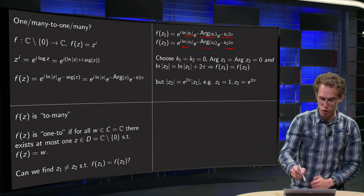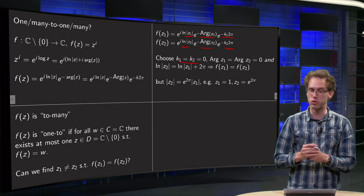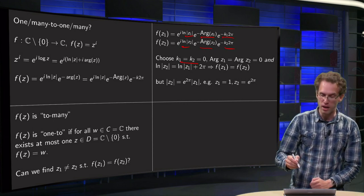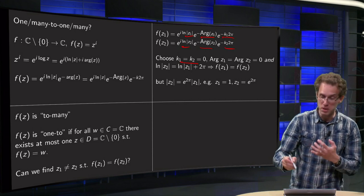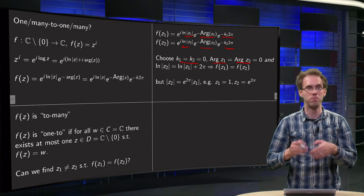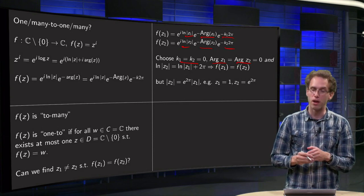So we will choose k1 and k2 equal to zero. Otherwise we can never make them equal. And that means that we have to choose the capital arguments to be equal. Let's put them to zero here.